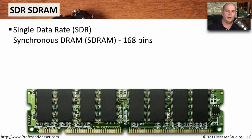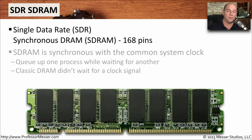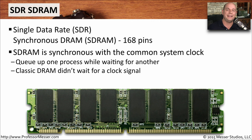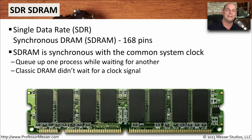The dynamic random access memory we talked about earlier — this is synchronous dynamic random access memory, called synchronous because it is synchronized to a common system clock. You can think of the computer constantly ticking off the seconds, and with every tick there's a particular process occurring. Inside of our computers there are many millions of processes occurring every second. Because it is synchronized to a clock, all of the other components inside the computer know exactly what's going to be happening with the next tick of that clock.